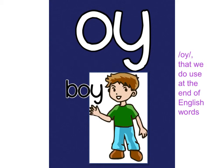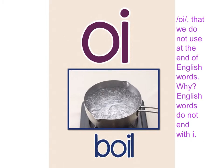OO, U — that we do use at the end of English words, like the word boy. OO, U — that we do not use at the end of English words. Why? English words do not end with I, like the word boil.